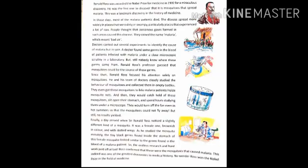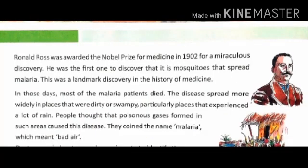Now here is a story of Sir Ronald Ross. Ronald Ross was awarded the Nobel Prize in 1902 for a miraculous discovery. He was the first one to discover that mosquitoes spread malaria. This is a landmark discovery in the history of medicine.